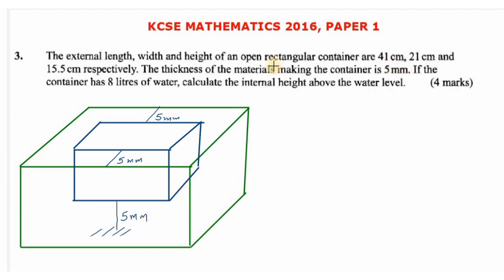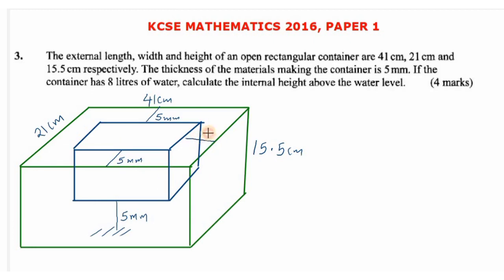We are given that the external length, width, and height are as follows: the external length is 41 centimeters, the width is 21 centimeters, and the height is 15.5 centimeters. Remember, what we are interested in is the length, width, and height of the internal part. Note that from the external margin to the internal margin, the thickness is 5 millimeters on each side.